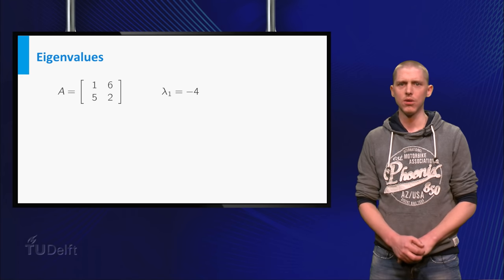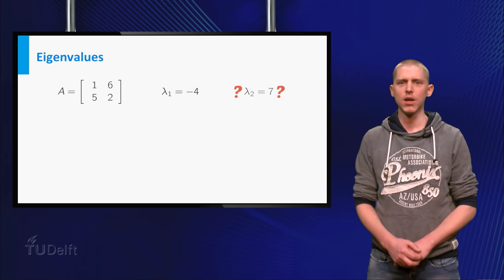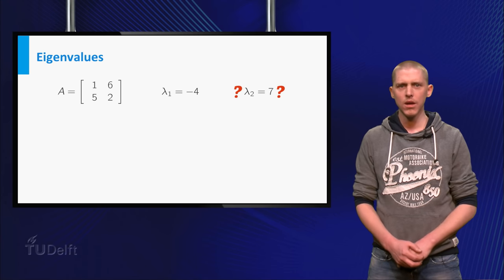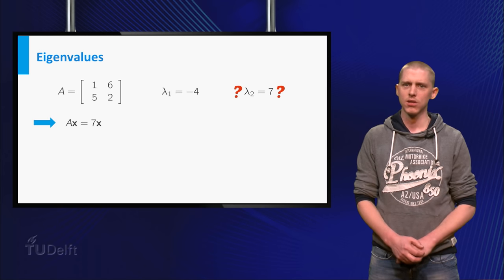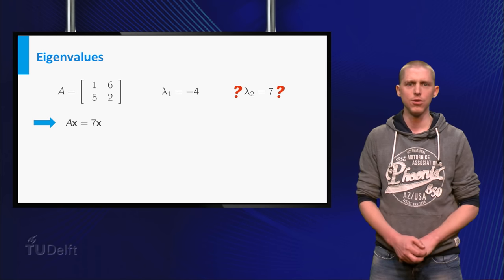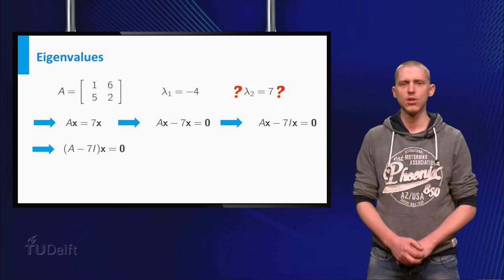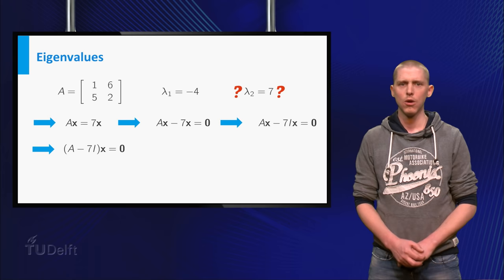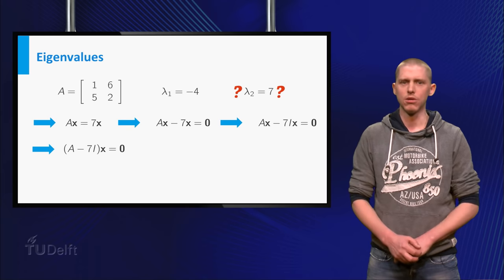The previous example showed that 1 was not an eigenvalue of A. Might 7 be an eigenvalue of A? If 7 is an eigenvalue of A, then the equation A times X equals 7 times X must have a non-trivial solution. You can rewrite this equation in the same 3 steps into an equation you can solve, which gives you the equation A minus 7 times I times X equals 0.